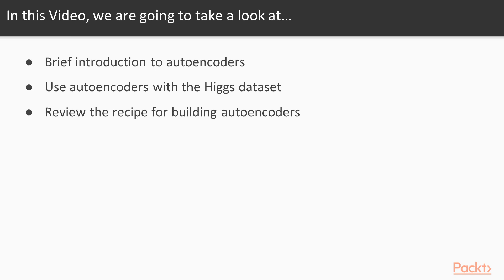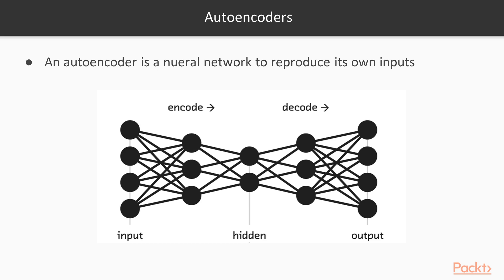What is an autoencoder? An autoencoder is a neural network built to reproduce its own inputs. We are dealing with unsupervised learning, so we don't have targets. What we want is to build a neural network capable of reproducing its own inputs as best as it can. Inputs are passed through a set of hidden layers in an encoding step, and the hidden layers use lower dimensionality to represent the same input.